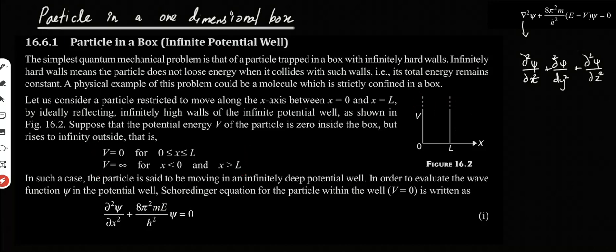V is equal to 0 for 0 less than or equal to x less than or equal to L. V is equal to infinity for x less than 0 and x greater than L. This is our boundary condition. In such a case, the particle is said to move in an infinitely deep potential well.